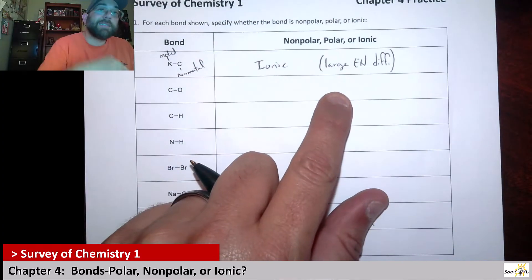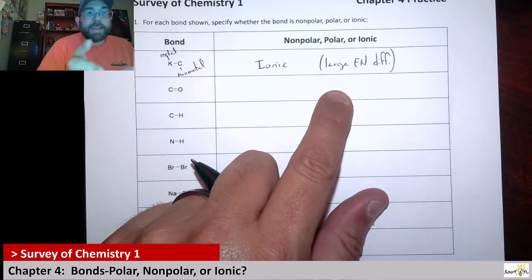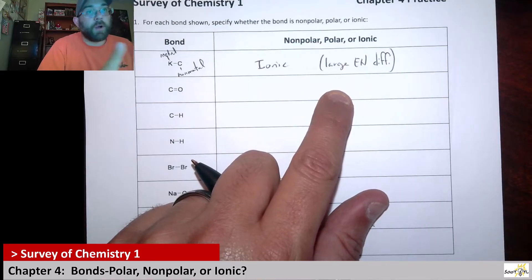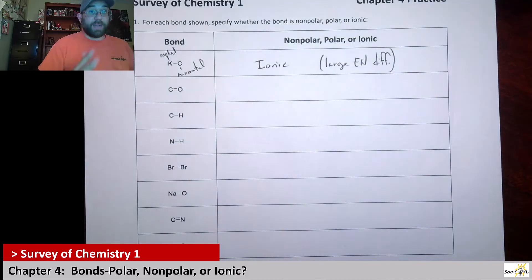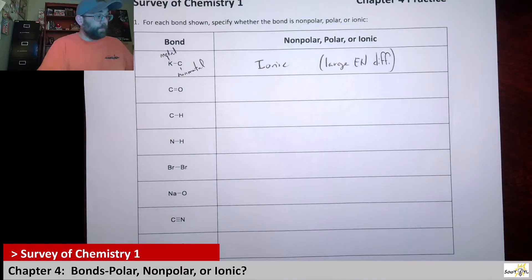If you don't believe me, you can go back to the slides. You can look at that table that gives all the values. You don't have to memorize those. But you can look and you can actually do the subtraction. What you'll see is that when you subtract those two numbers, you get a value greater than 2. That's ionic when the electronegativity difference is greater than 2.